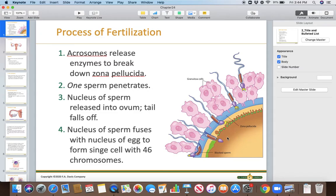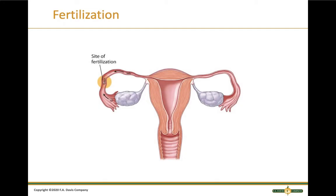The nucleus of the sperm is released, the tail falls off, and then the nucleus from the sperm and the nucleus from the egg fuse together. Remember, we talked about meiosis — you end up with cells with half the number of chromosomes. Here they fuse together and you have one cell with the correct number of chromosomes. Fertilization happens in the fallopian tube usually.